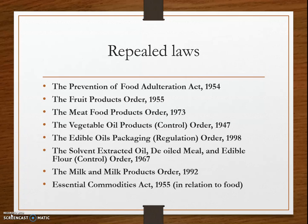Now let's see which laws and regulations existed prior to the enforcement of FSSA. These include: the Prevention of Food Adulteration Act 1954, the Essential Commodities Act 1955, the Fruit Products Order 1955, the Meat Food Products Order 1973, the Vegetable Oil Products Control Order 1947, the Edible Oil Packaging Regulation Order 1998, and the Solvent Extracted Oil, De-oiled Meal and Edible Flour Control Order 1967.